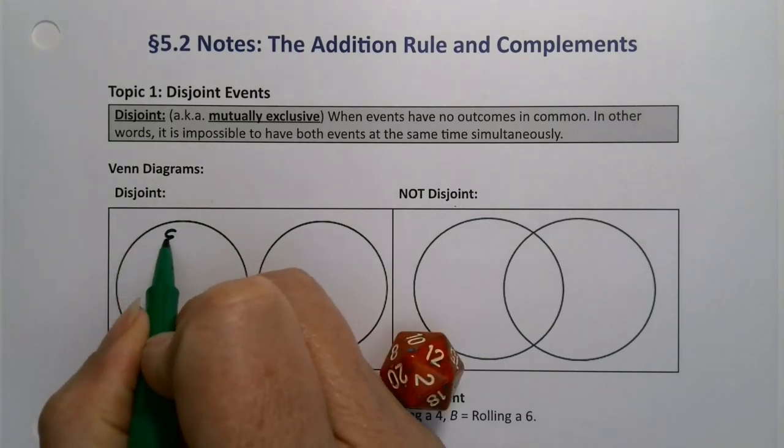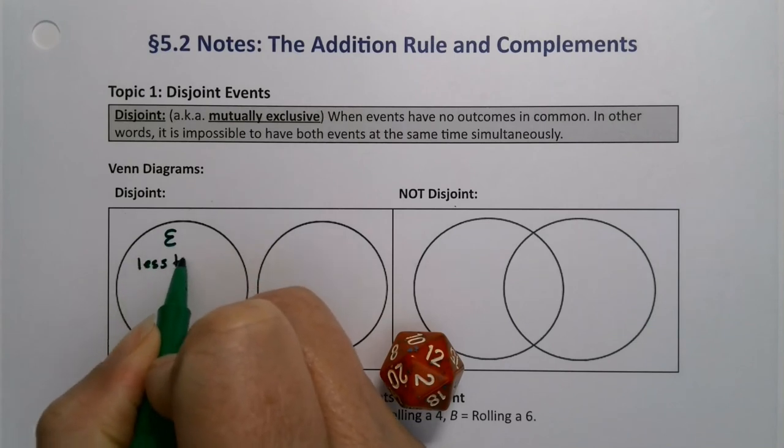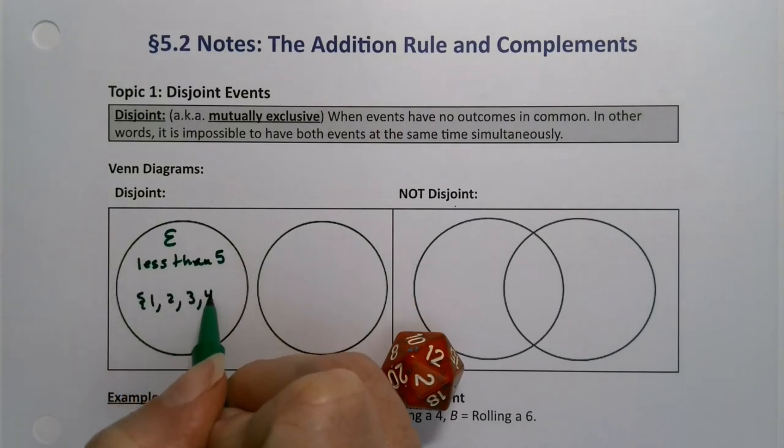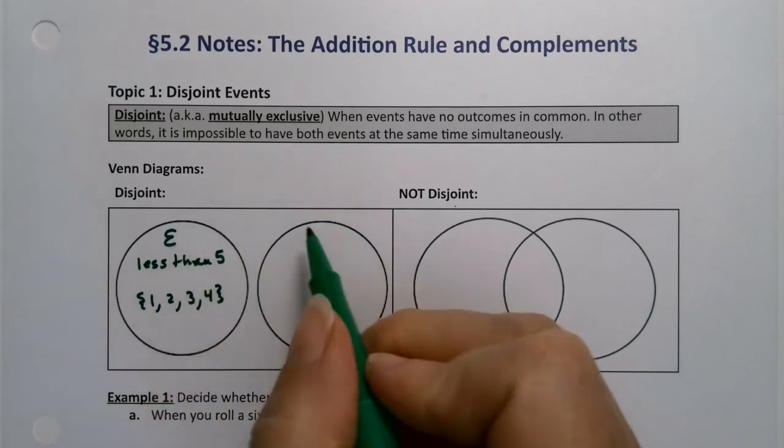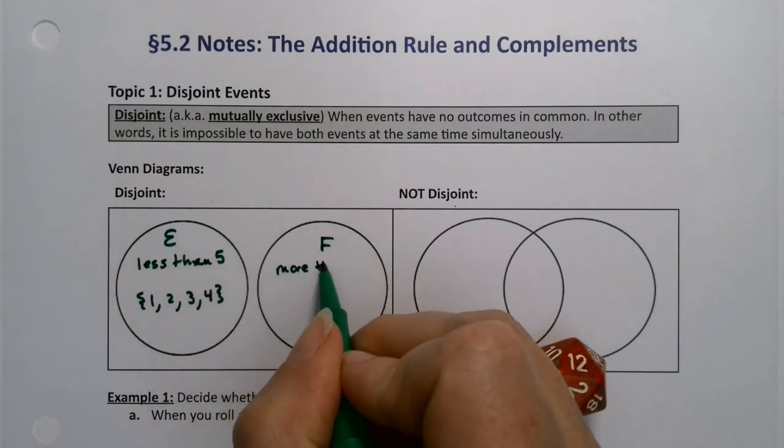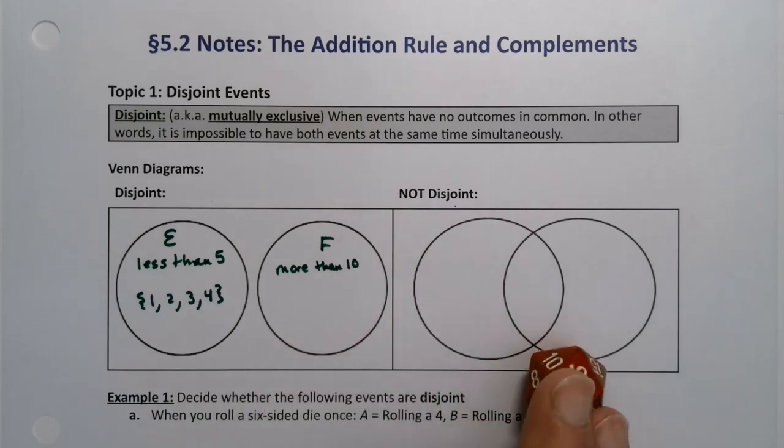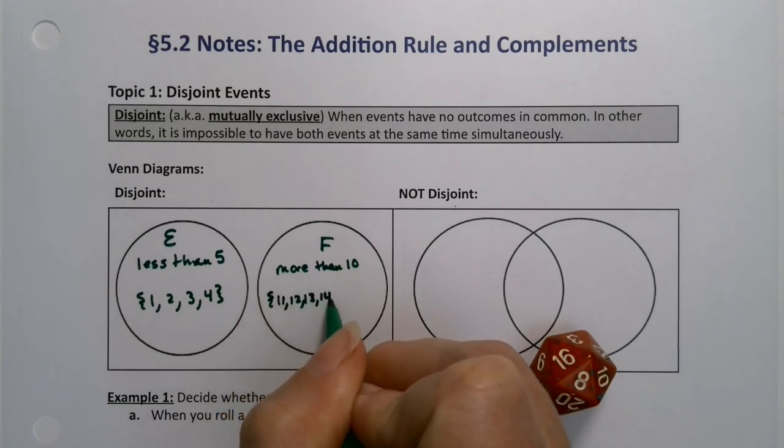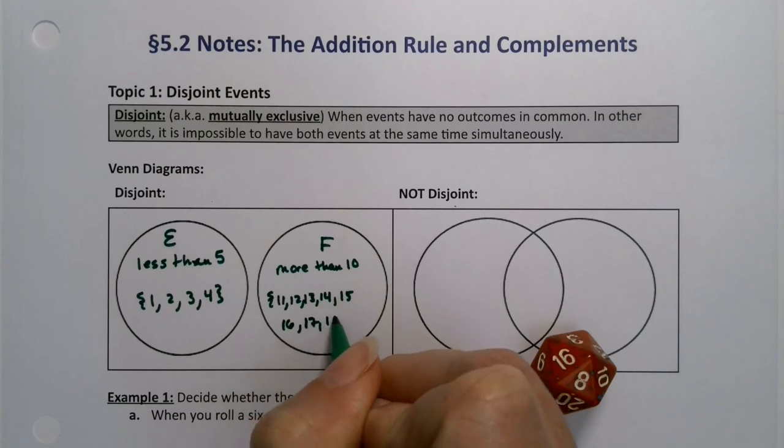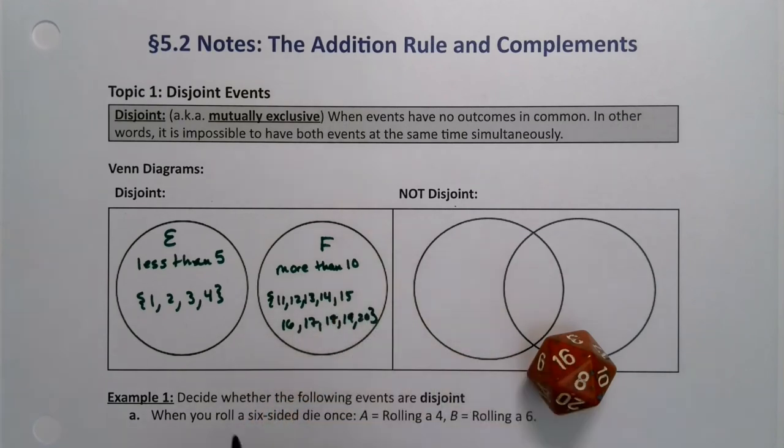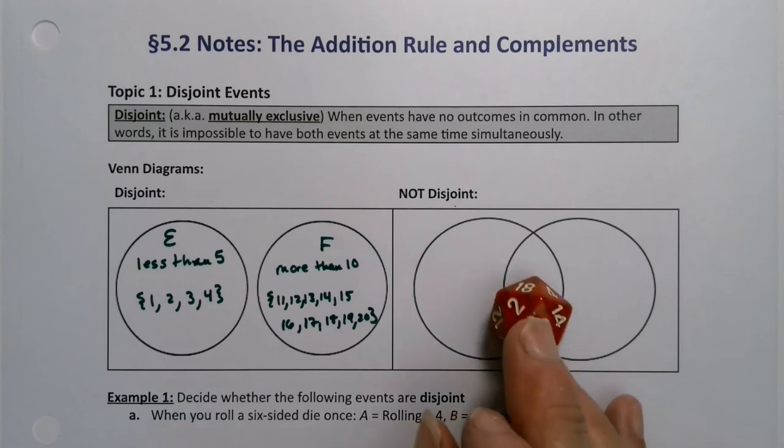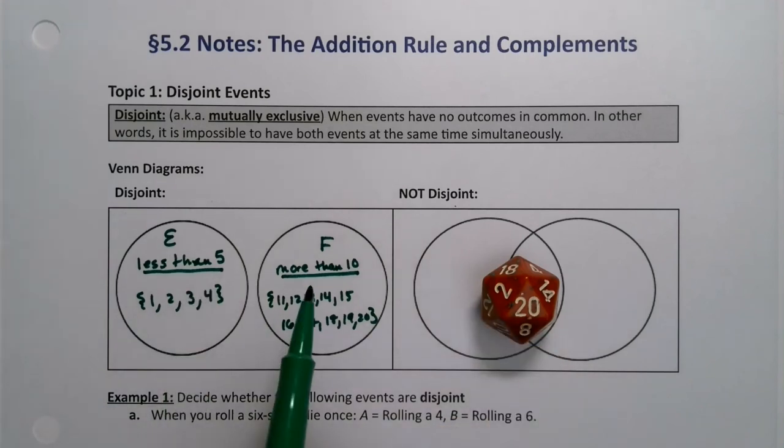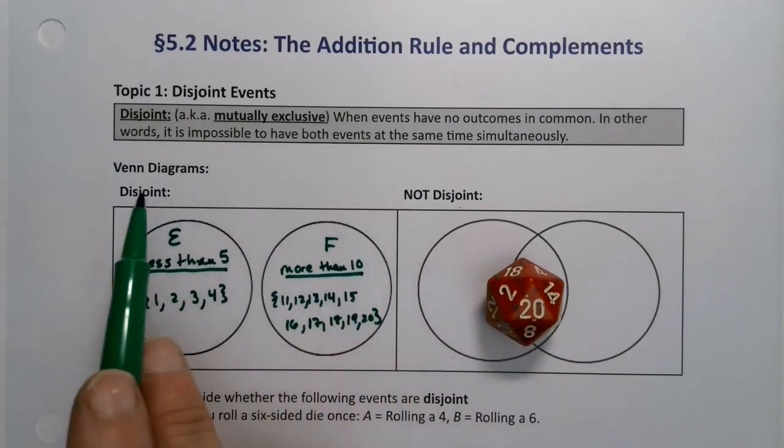So over here, in this event E, I could have it be less than 5. So that would be the numbers 1, 2, 3, and 4 in here. And let's say this event F, I'm going to say more than 10. So more than 10, 10 doesn't count, so it would be 11, 12, 13, 14, 15, 16, 17, 18, 19, and 20.